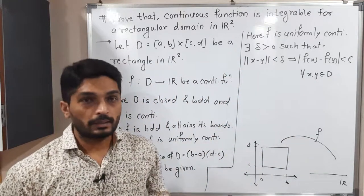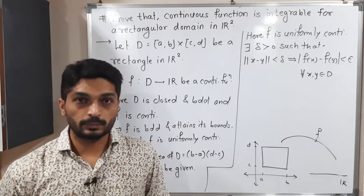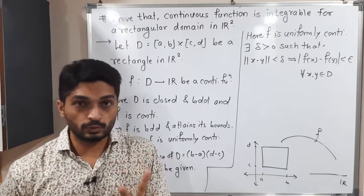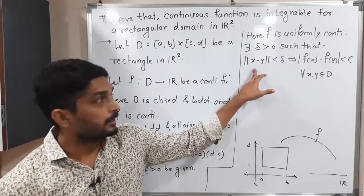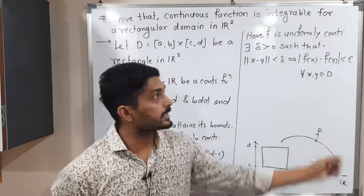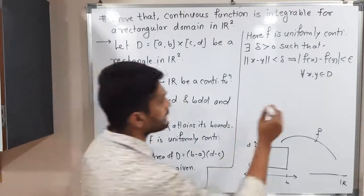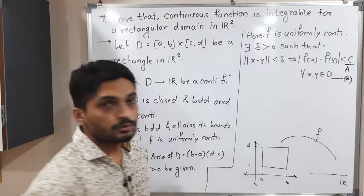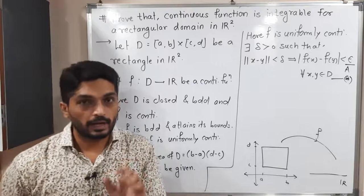Here X and Y are elements of D, which is a subset of R2, so X means (x1, x2) and Y means (y1, y2) — that is why we apply the norm. The domain is a subset of R2 and the codomain is a subset of R, so we use mod for the codomain. One adjustment: instead of epsilon I will use epsilon divided by A, and I will call this equation star.